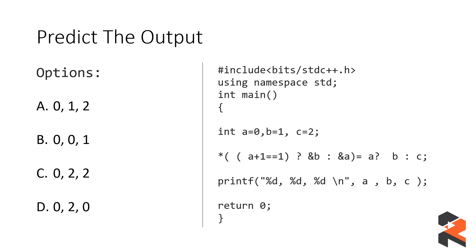The variable a has a value of 0 assigned to it. Inside this function, as you can see, there are many brackets — the nested brackets need to be solved first. Looking at the statement a + 1 == 1, it is evaluating a boolean condition. Since the value of a is 0, 0 + 1 evaluates to 1, which is true.